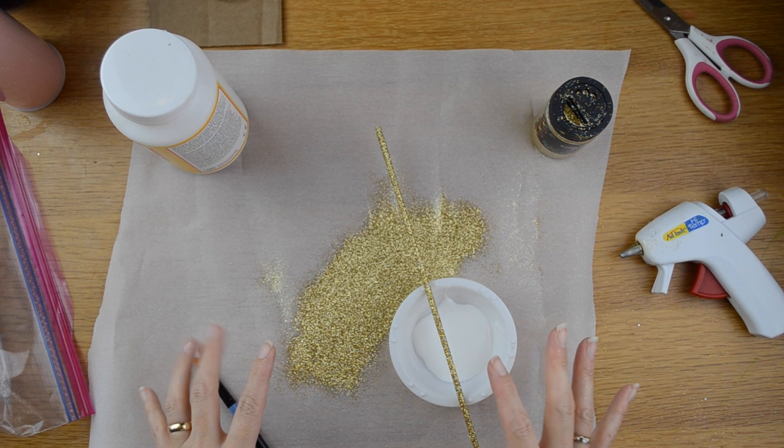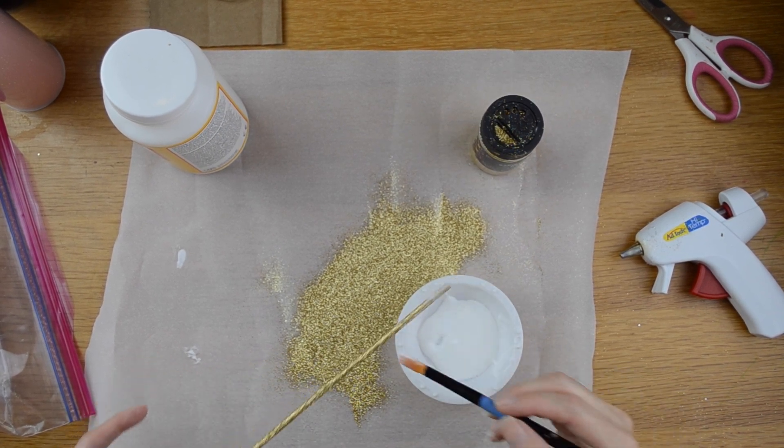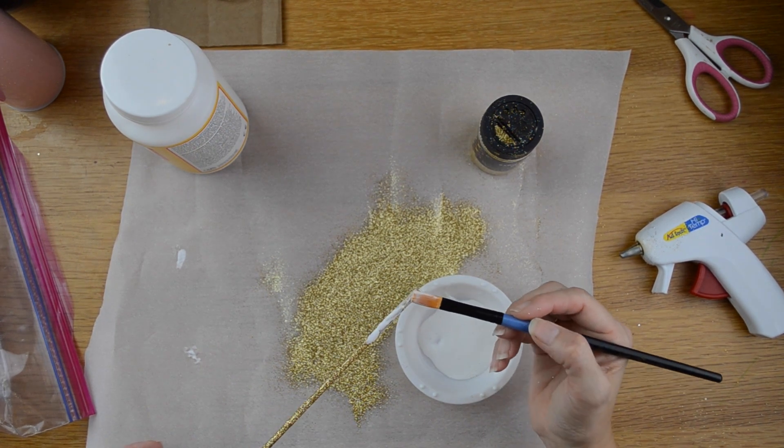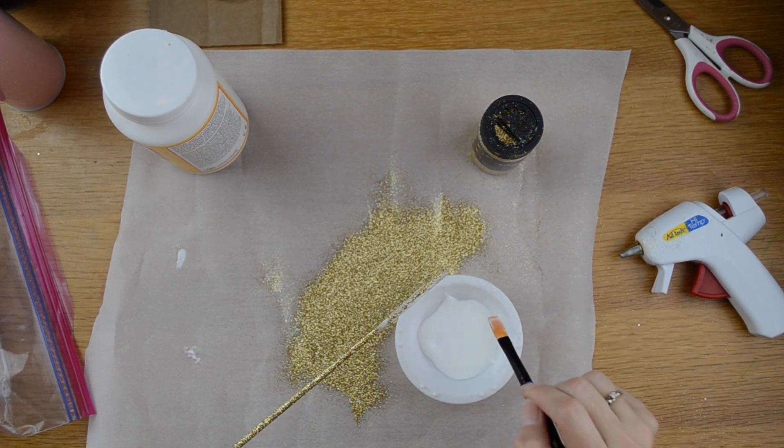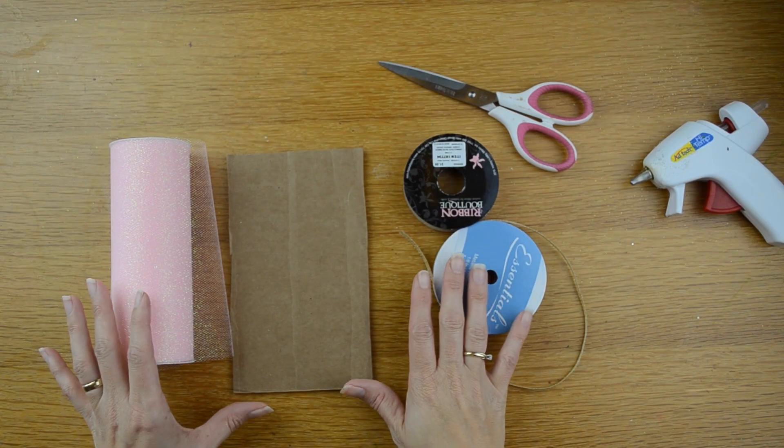Now I'm going to put the Mod Podge onto top of the glitter and of course this will help your glitter stay intact and not fall all over the place. You're going to let this other layer of Mod Podge dry.